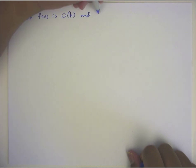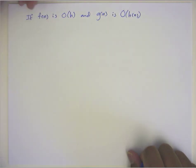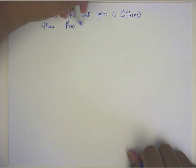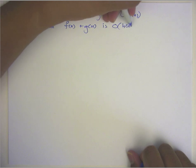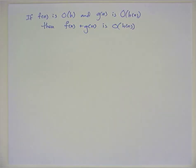So let me go ahead and start by just writing the property down. We want to prove that if f(n) is big O of h(n) and g(n) is big O of h(n), then f(n) plus g(n) is big O of h(n). Just like we did with the proofs in class, we would basically want to set this up in the same way.